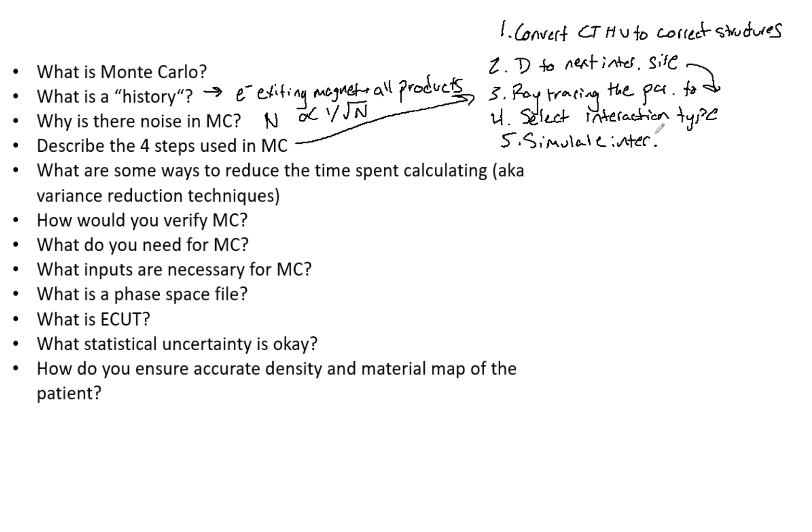Those are the steps in Monte Carlo. I just realized I wrote five steps. So what are the five steps in Monte Carlo? You could probably lump a couple of these—select interaction type and simulate that could be one step—but those ultimately are the steps.